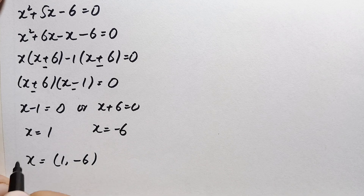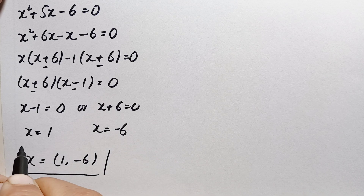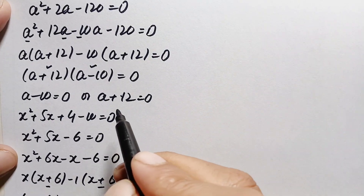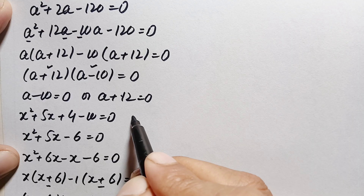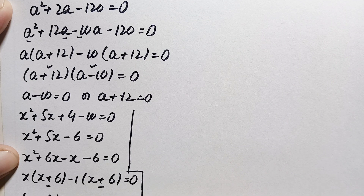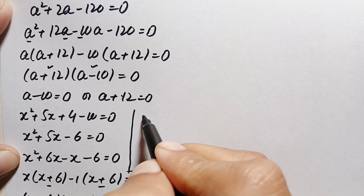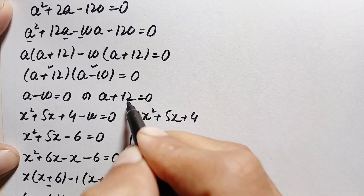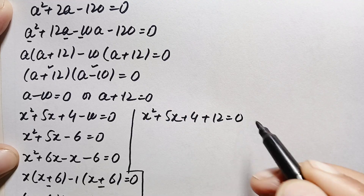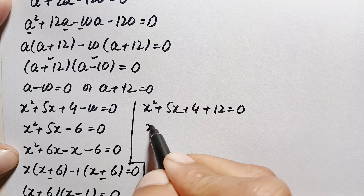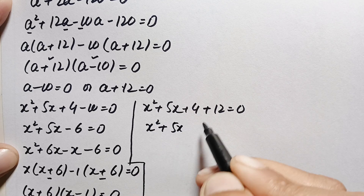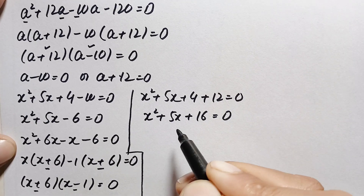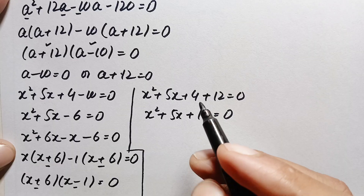Now for the second case, a+12 = 0 means a = −12. Substituting back: x²+5x+4+12 = 0, which becomes x²+5x+16 = 0. We cannot factor this, so we will use the quadratic formula.